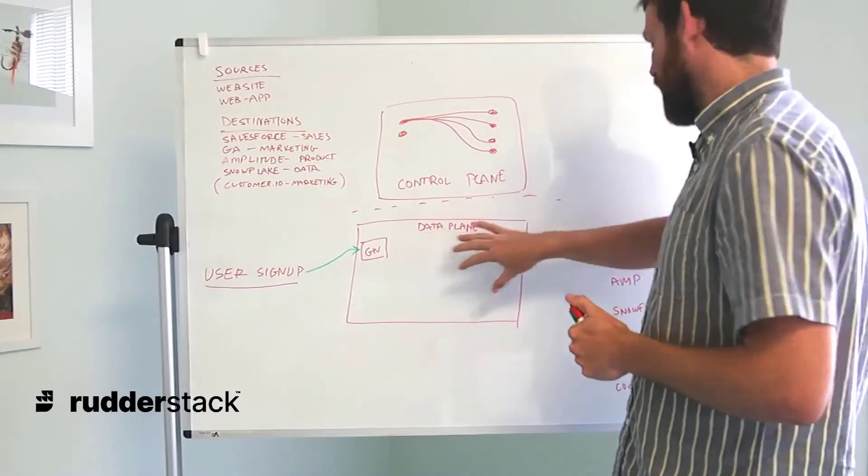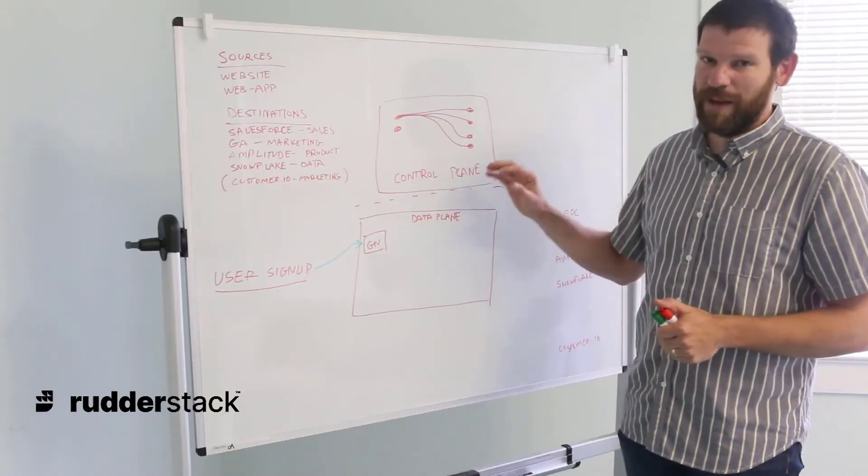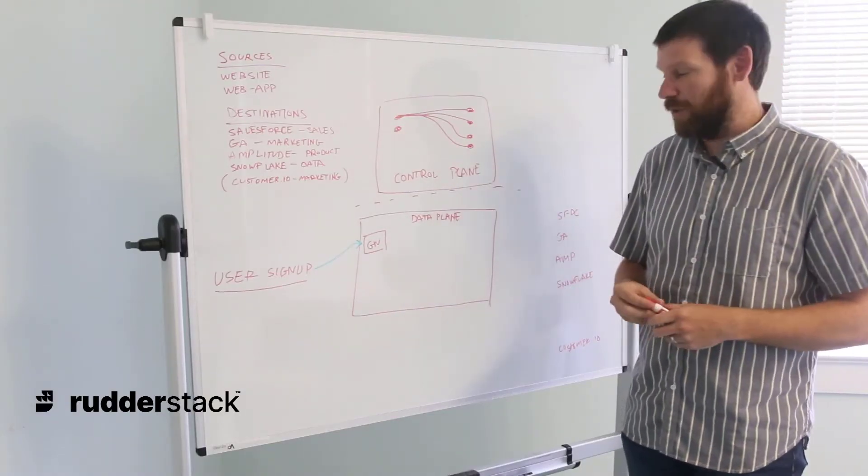So the events are not being processed to downstream tools, but we're still ingesting them at the gateway. Once everything comes back up, we can continue to process events without losing anything.